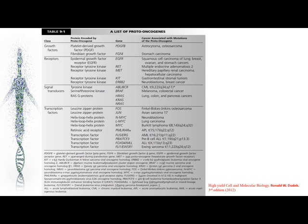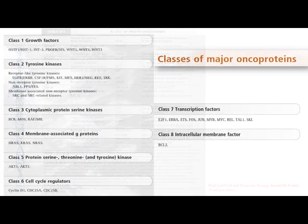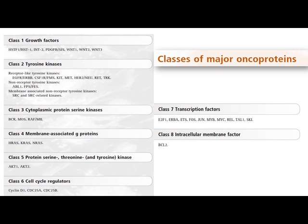Different oncoproteins lead to different cancers. For example, PDGFB growth factor changes can lead to astrocytoma or osteosarcoma. CNS tumors can originate from growth factor tyrosine kinases, cytoplasmic proteins, serine-threonine kinases, transcription factors, and intracellular membrane factors. You just need to get an idea of where the major oncoproteins are in our body and what changes they cause.